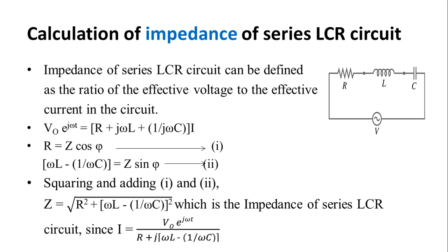For this circuit, we can write the expression: V₀ e^(jωt) = (R + jωL + 1/jωC) · I. For simplification, we put R = Z cos φ and replace (ωL − 1/ωC) with Z sin φ — calling these equations 1 and 2 respectively. Squaring and adding these equations, we get the expression for impedance: Z = √(R² + (ωL − 1/ωC)²). This gives the impedance of the series LCR circuit.